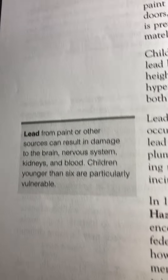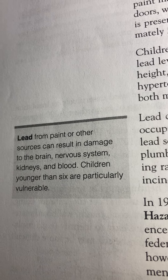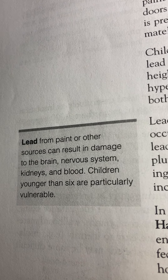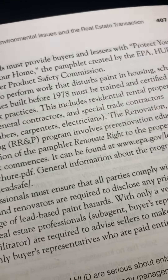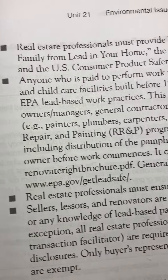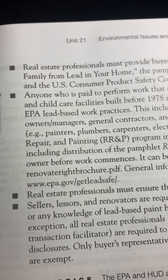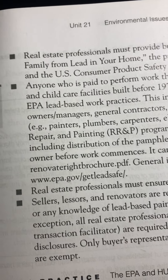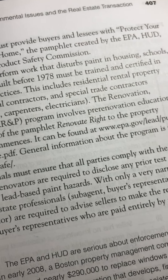Lead from paint or other sources can result in damage to the brain, nervous system, kidneys, and blood. Children younger than six are particularly vulnerable. Page 407. Real estate professionals must provide buyers and lessees with the pamphlet 'Protect Your Family from Lead in Your Home,' created by the EPA, HUD, and the U.S. Consumer Product Safety Commission. Anyone who is paid to perform work that disturbs paint in housing, schools, and child care facilities built before 1978 must be trained and certified in EPA lead-based work practices.